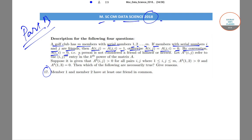So it has been considered that a person is not considered a friend of himself or herself. Now let A to the power K of (I,J) refer to the (I,J)th entry in the Kth power of the matrix A.